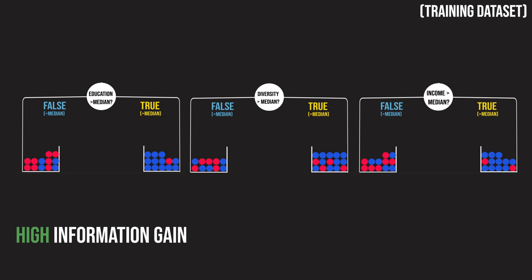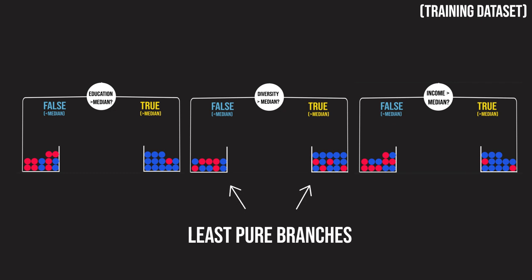Splitting on racial diversity would have been the worst choice. Although the true branch contains mostly blue states, the false branch is basically 50-50 red and blue. Knowing the state lacks diversity adds almost no new information to the model. The information gain from racial diversity is very low.